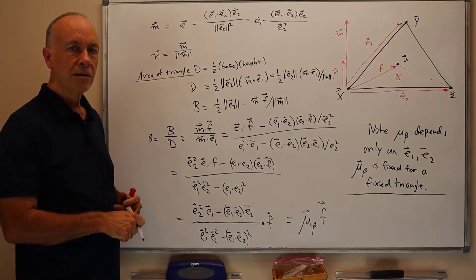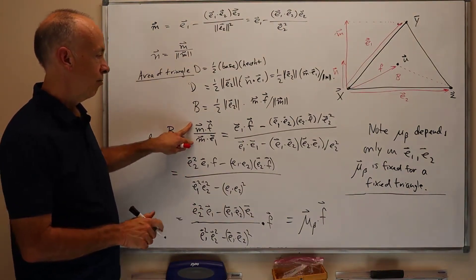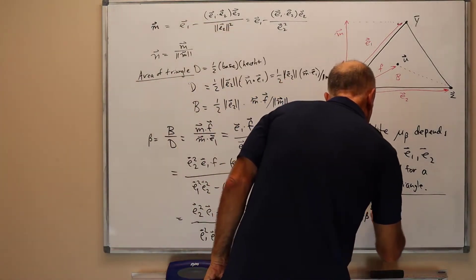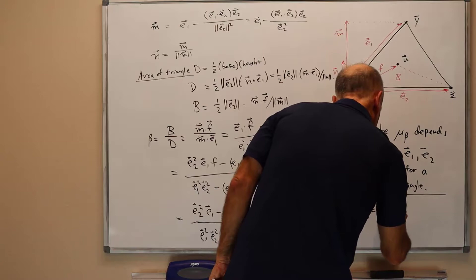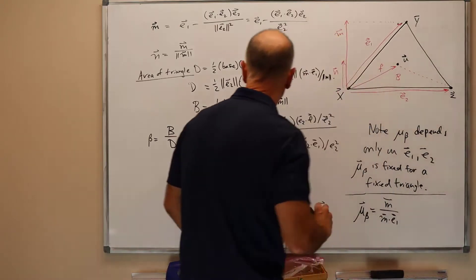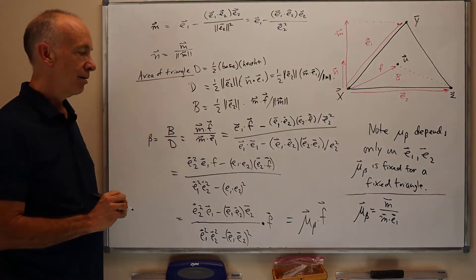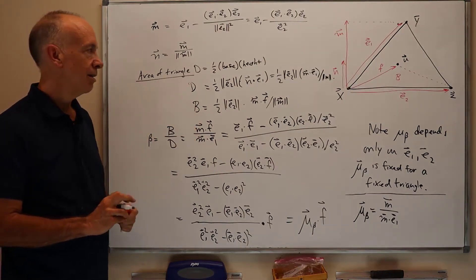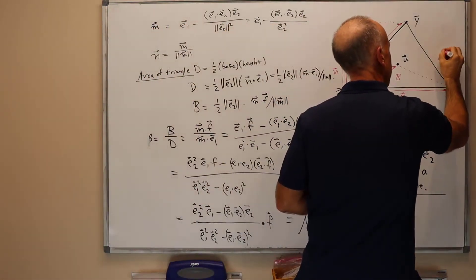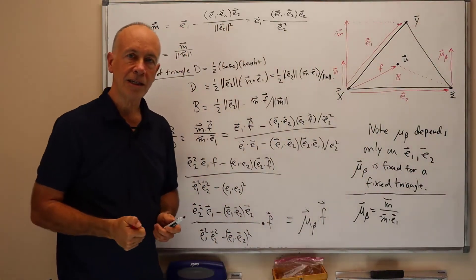There is another way to define mu beta instead of this complicated formula. We could go back to this formula here and say that mu beta is m over m dot e1 because we have that vector dot f up here. This could be an easier way to do hand computations. It also shows that mu beta is in the same direction of m. So mu beta is pointing perpendicularly to the edge e2.